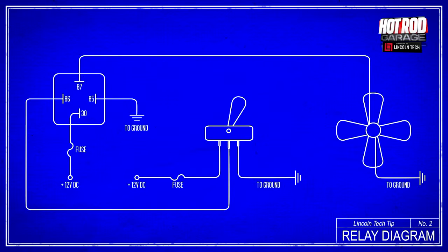Using the relay diagram you can see that you run a fused wire from your fuse block to a toggle switch at the dash. The wire coming from the switch would go to number 86 on the relay.